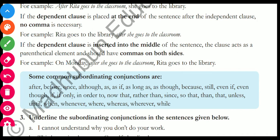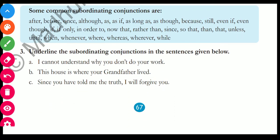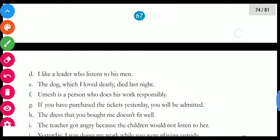Let us take the exercise. Underline the subordinating conjunctions in the sentences given below. 'I cannot understand why you don't do your work' — the subordinating conjunction is 'why'. 'This house is where your grandfather lived' — the answer is 'where'. 'Since you have told me the truth, I will forgive you' — the answer is 'since'. Try solving the remaining sentences similarly.